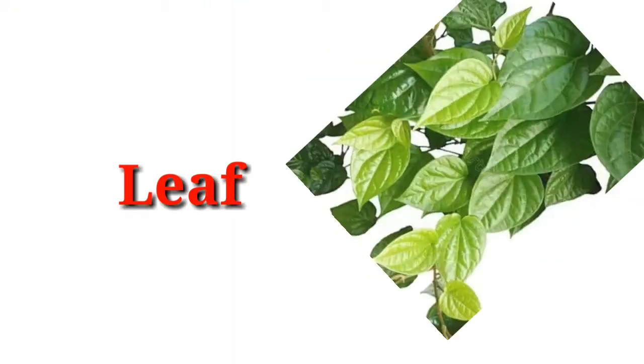Next part is leaves. Leaves are mostly green, but you can see different colors. Leaves help the plant prepare food using sunlight.